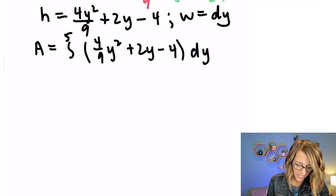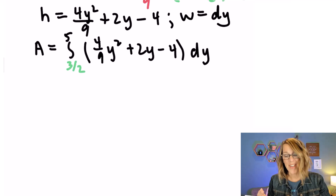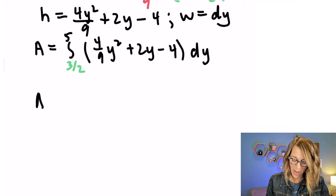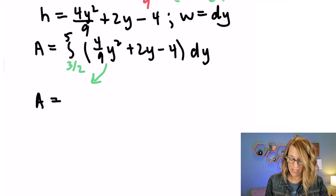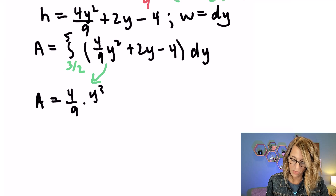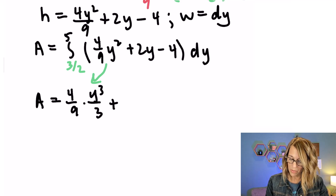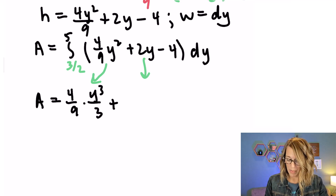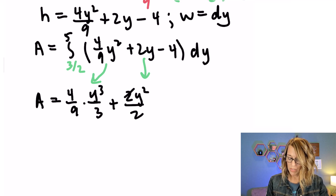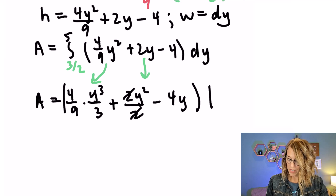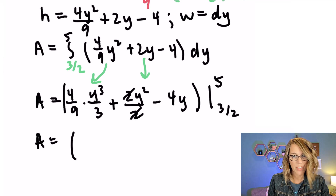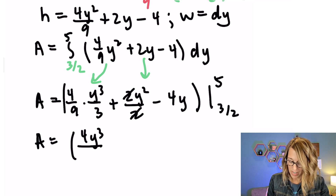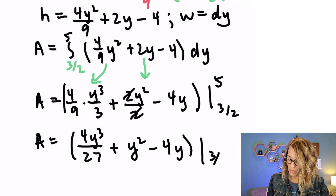I'm going to replace that lower limit with 3 halves. Now integrating using the power rule: for 4 ninths y squared, the power goes up to 3 and I divide by 3, giving 4y cubed divided by 27. For 2y, the power goes to 2 and dividing by 2 gives y squared. The constant negative 4 gives negative 4y. So the antiderivative is 4y cubed divided by 27 plus y squared minus 4y, evaluated from 3 halves to 5.